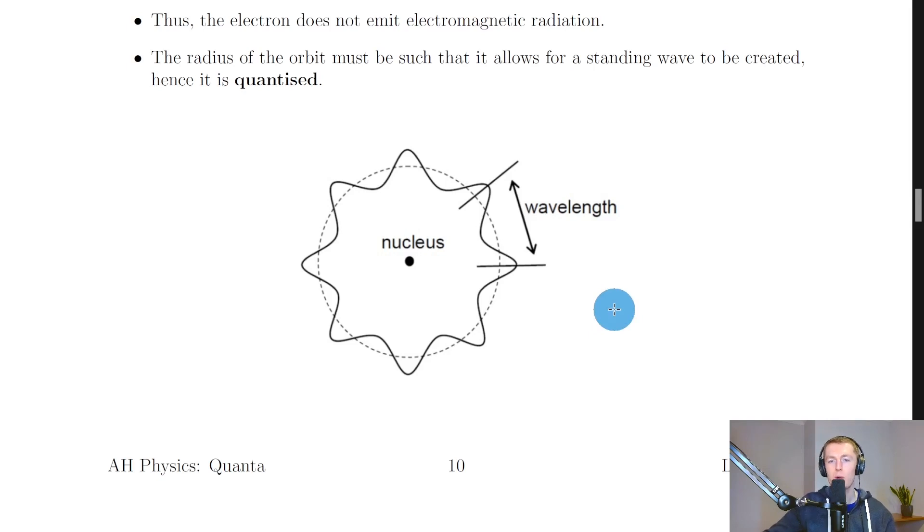And therefore de Broglie concluded that when we think about electrons as standing waves, rather than as particles, then that can explain why electrons in these orbits can remain stable, rather than being unstable and spiraling in towards the nucleus.